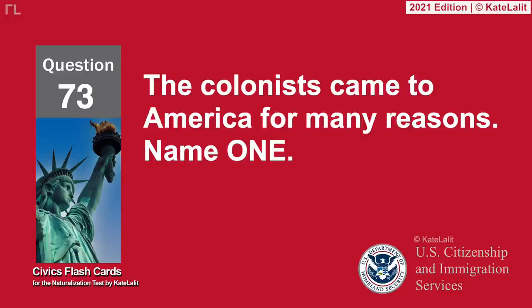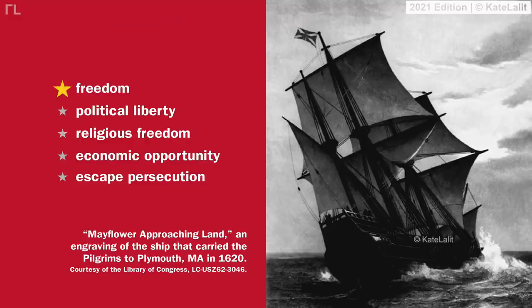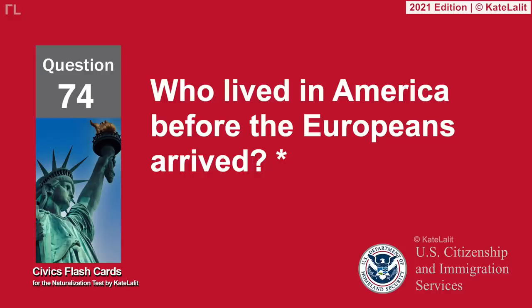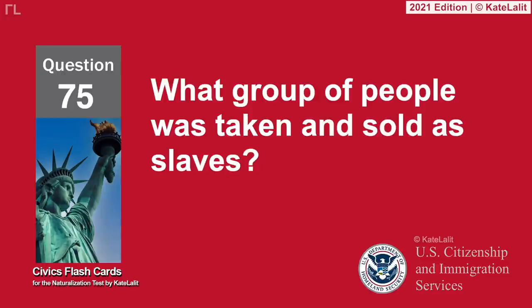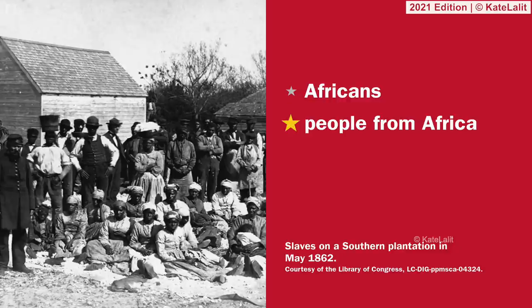The colonists came to America for many reasons — name one: Freedom. Political liberty. Religious freedom. Economic opportunity. Escape persecution. Who lived in America before the Europeans arrived? American Indians — Native Americans. What group of people was taken and sold as slaves? Africans — people from Africa.